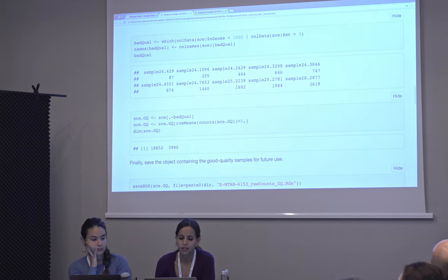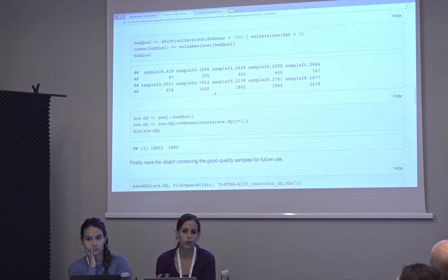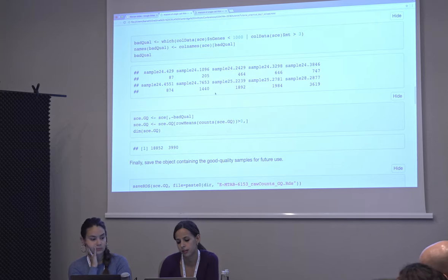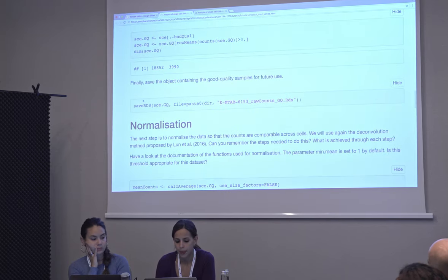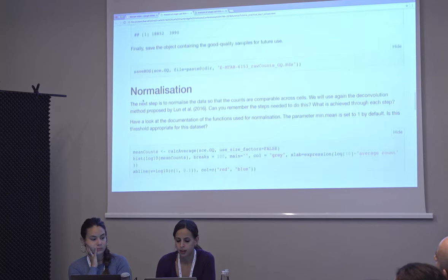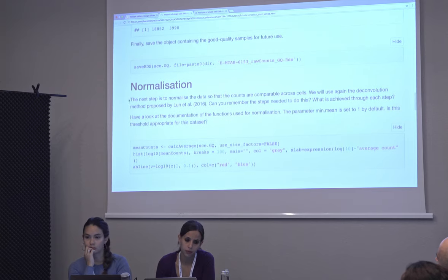In this case, because we're working with a restricted set of data, we have very few bad quality samples, but we removed those. And then we can move on to normalization.